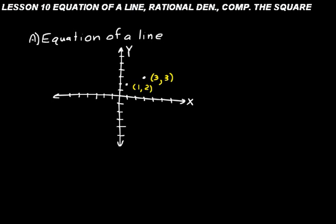We have those two points, and we can draw a line through them to determine its equation. The easiest way is to set up a little triangle based on those two points. Draw a horizontal line through one point and a vertical line through the other. The vertical side of that triangle is one unit of height and the horizontal side is two units long.